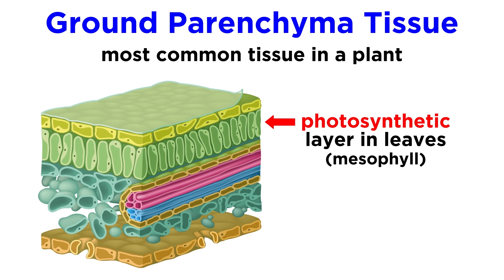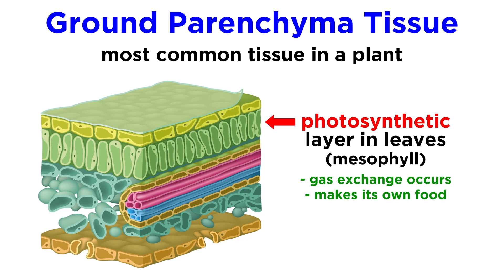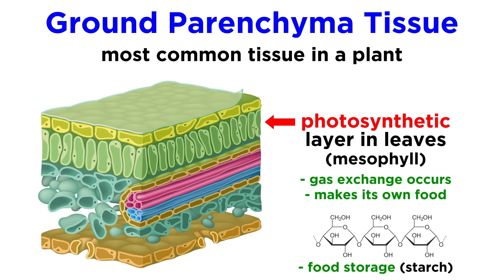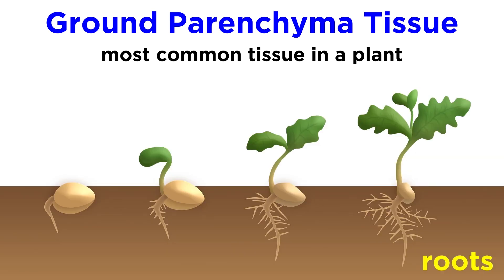Parenchyma tissue is responsible for the photosynthetic layer in leaves, called the mesophyll, where the plant performs gas exchange and creates sugars, making its own food. Parenchyma tissue is also how a plant stores excess energy in the form of starches, which are complex polysaccharides. Starch-filled parenchyma tissue can be found in a plant's roots, and parenchyma tissue also makes up the majority of a seed, so that the starches can feed the embryonic plant until it's able to photosynthesize on its own.